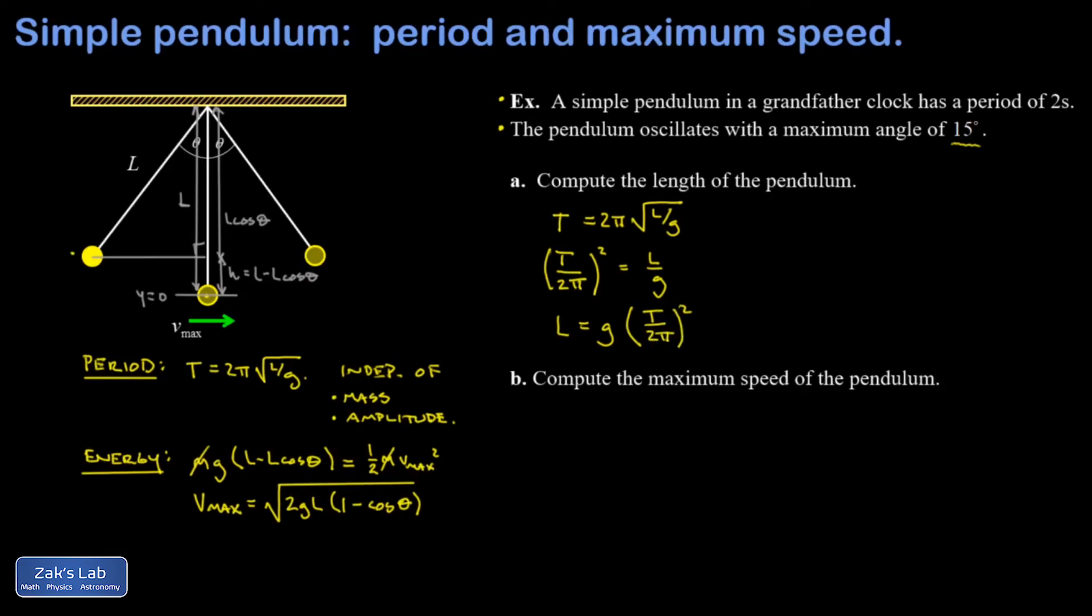And assuming that we're on Earth, that G is 9.8 meters per second squared, the T was 2 seconds, and I get 0.993 meters.